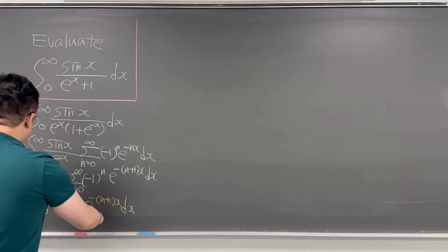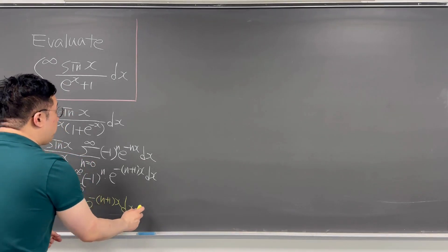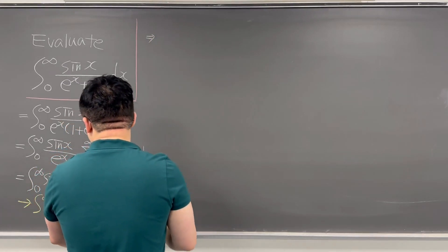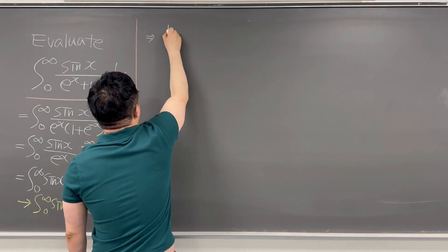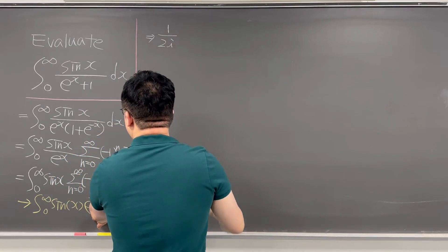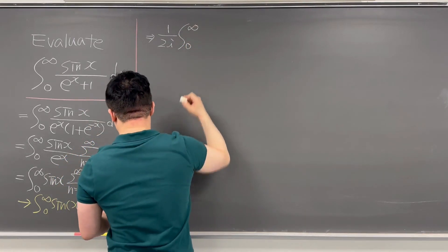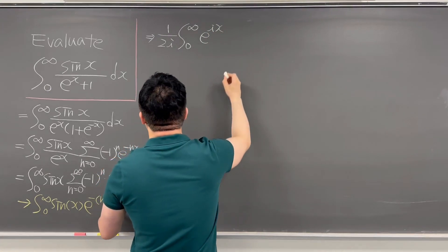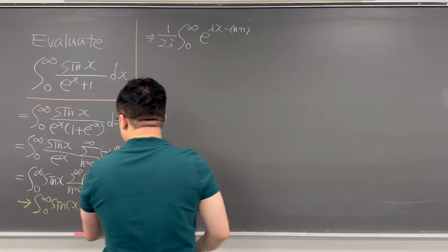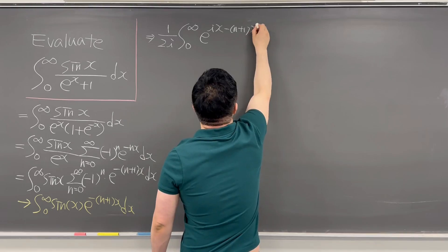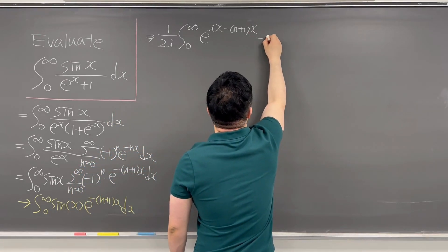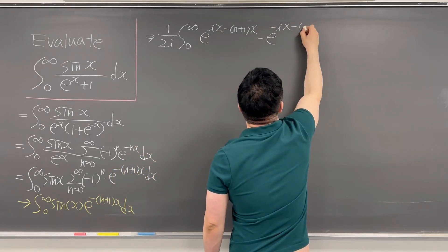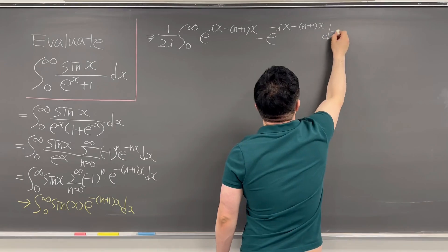We need to work this integral out. This would be the same as rewriting using the imaginary i term. So this is the same as 1 over 2i, times the summation from n equal to 0 to infinity, of e to the power of i times x, minus n plus 1 times x, minus e to the power of negative i times x, minus n plus 1 times x, and dx.